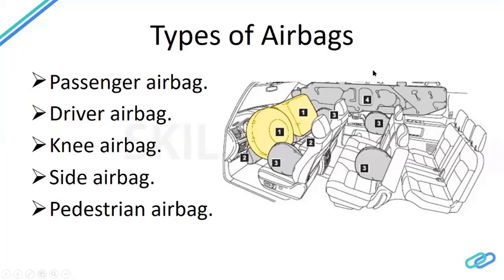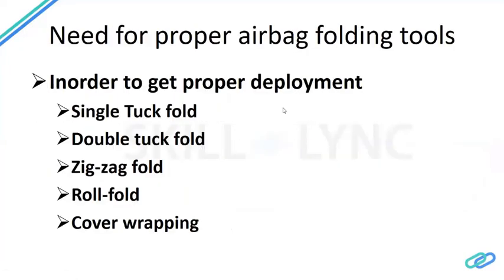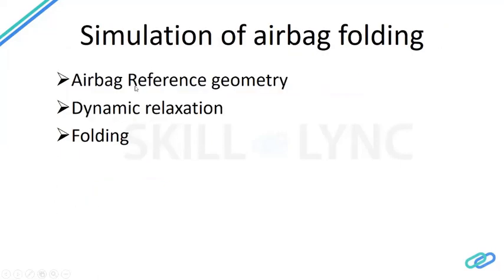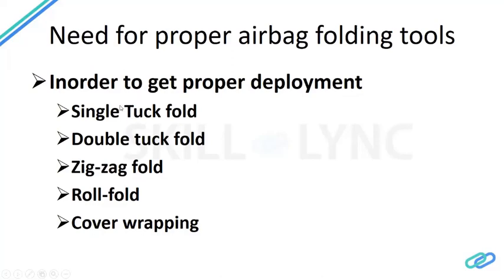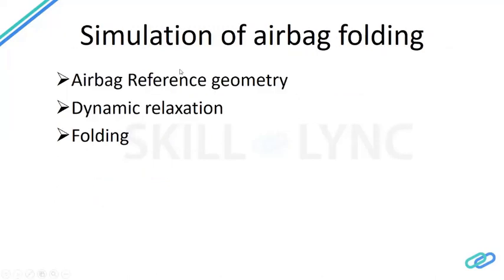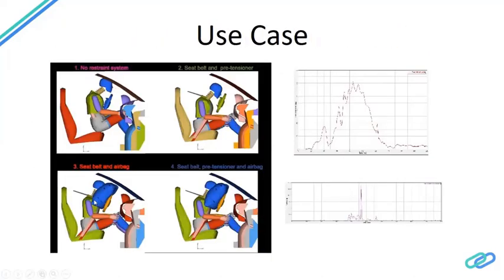Zigzag folds are used for side and passenger airbags, and cover wrapping simulation ensures proper spacing matching the real-world setup. After folding, the concept of airbag reference geometry is important: it provides the exact original dimensions of the airbag — a clean FE model with a uniform element size of 5mm. The nodes from the folded model are copied and placed inside this reference geometry, which prevents wrinkling and sticking effects during deployment simulation.